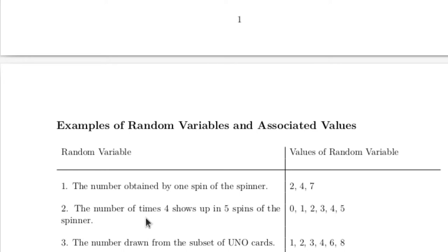On the other hand, the number of times that four shows up in five spins of the spinner — it could show up zero, one, two, three, four, or five times. Make a distinction between what the random variable is and what the values of the random variable are.